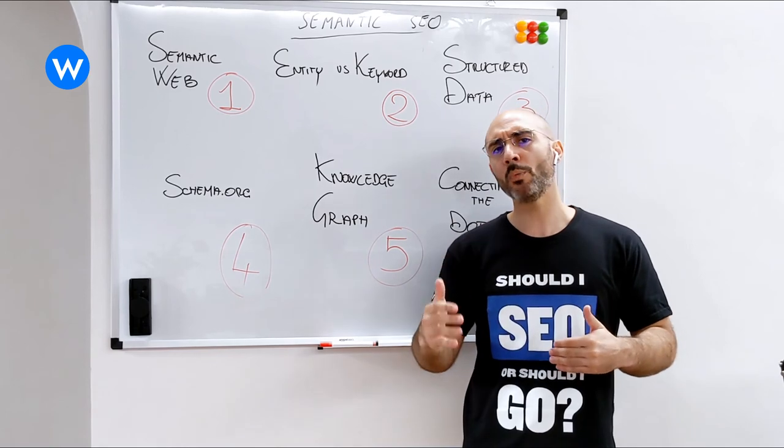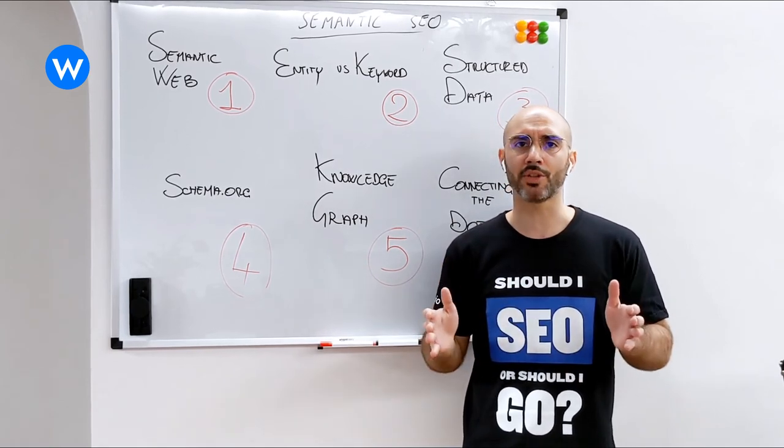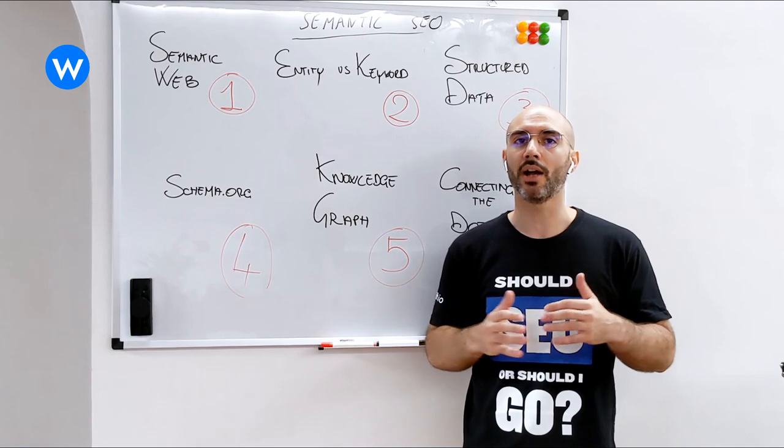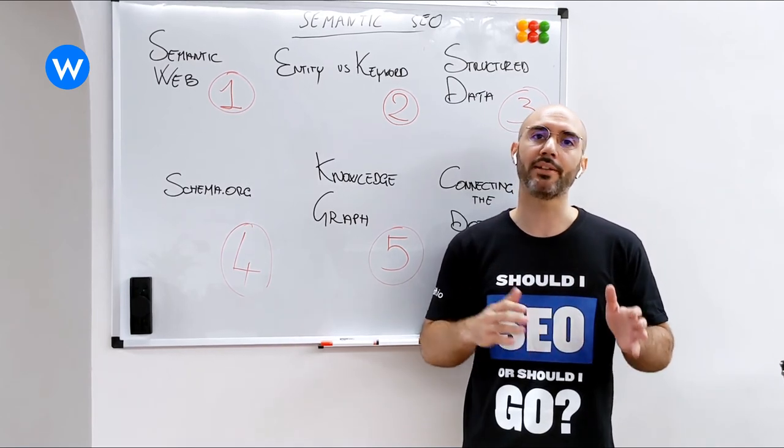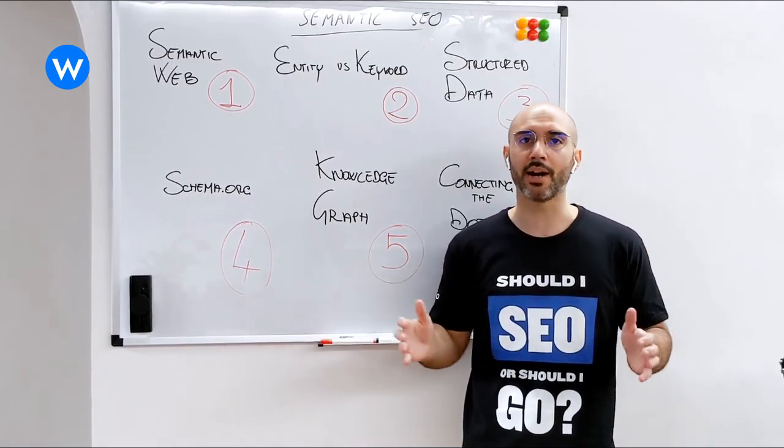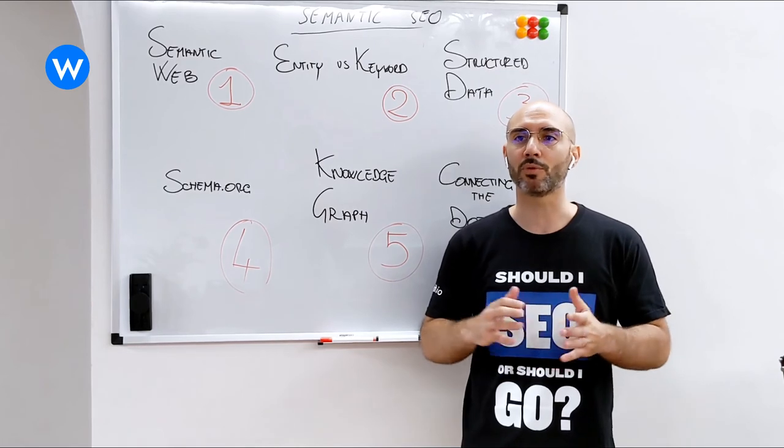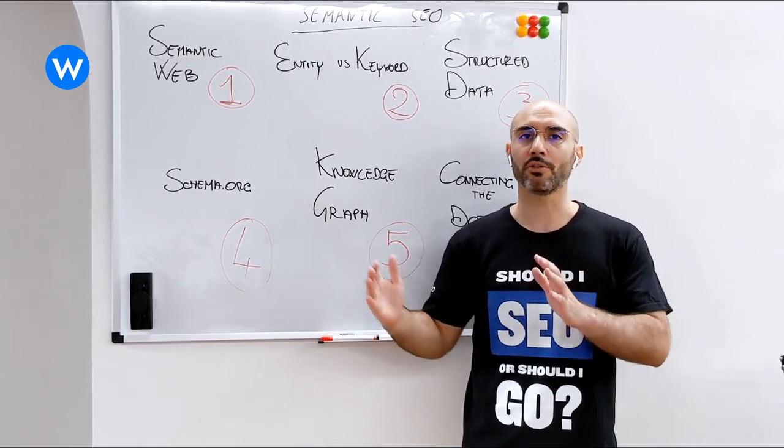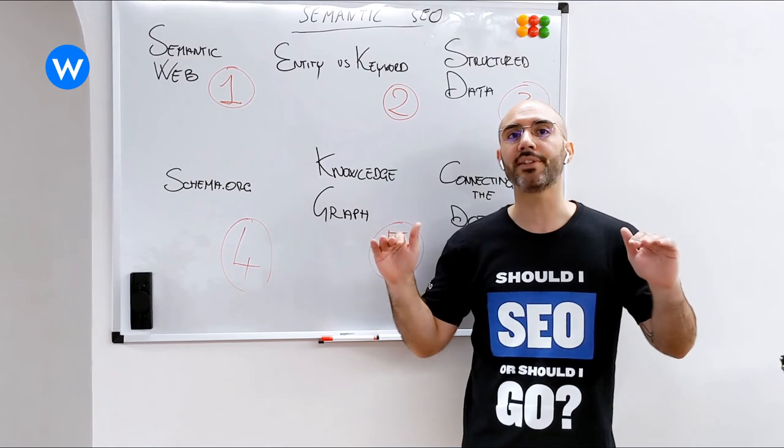That's why when we do a semantic SEO strategy, we use entities and we don't use many keywords. I'm not saying that keywords are not important, they are. You still have to use them, you still have to know how to craft a title, you still have to know how to customize your meta descriptions and all the basic stuff.